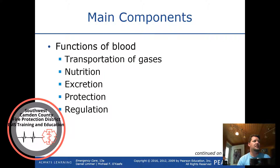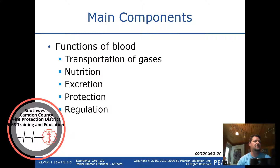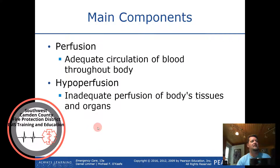Functions of the blood include transportation of gases, nutrition, and excretion — the kidneys filter the blood — as well as protection and regulation. Perfusion is the adequate circulation of blood throughout the body. Hypoperfusion is the inadequate perfusion of blood to the body's tissues and organs.